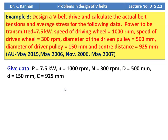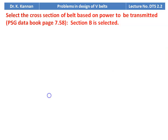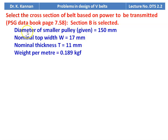Given data: power = 7.5 kW, motor speed = 1000 RPM, driven wheel speed = 300 RPM, larger diameter = 500 mm, smaller diameter = 150 mm, center distance = 925 mm. Speed ratio = 1000 / 300 = 3.33. For 7.5 kW, we select cross section B once again, noting all given dimensions are used directly in calculation.